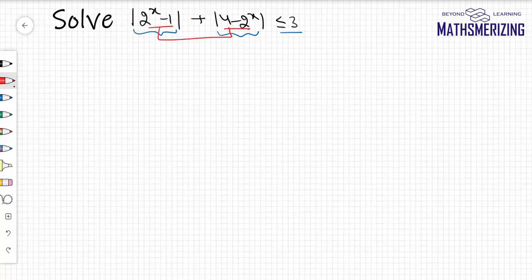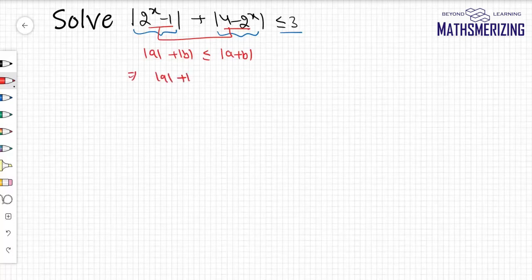So if I write this as mod of a and this as b, so right hand side is essentially a plus b. It says |a| + |b| should be less than |a + b|, but we know that |a| + |b| is always greater than |a + b|.